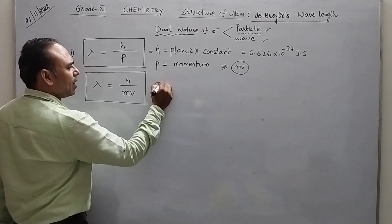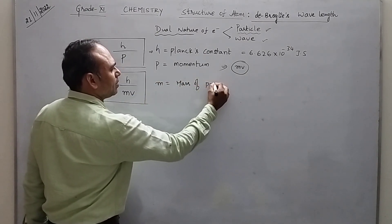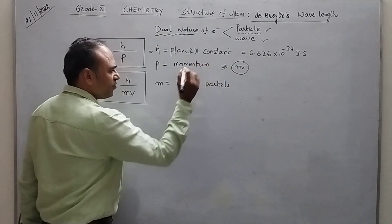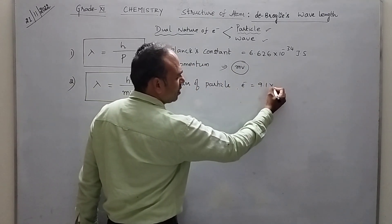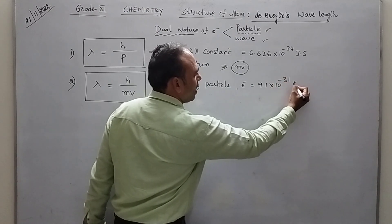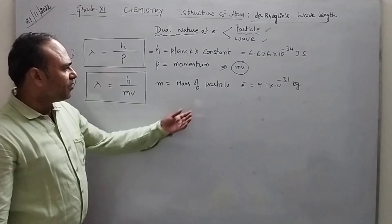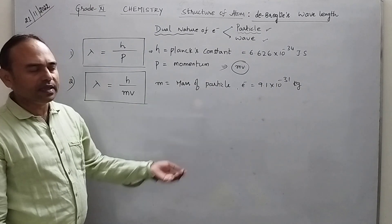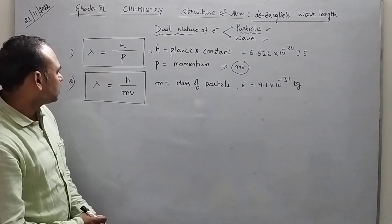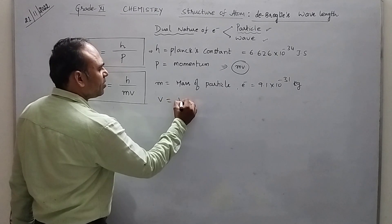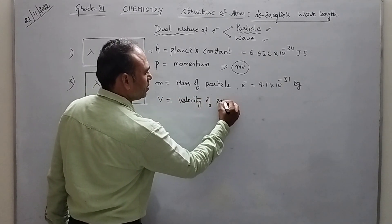Where M is equal to mass of particle. If you are taking electron, you know mass is equal to 9.1 into 10 to the power of minus 31 kg. These are subatomic particles — either you can take electron or proton. And V is given as the velocity of particle.